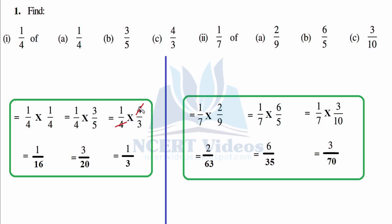For the next part, 4 over 20 simplifies with cancellation to 4 over 3. That was your first part. Now for 1/7 of 2/9, 6/5, and 3/10 — writing it down. 2 into 9 is 63; 6 into 5 is 35, nothing can be cancelled. The answer is 3 over 70. So these are all proper fractions.